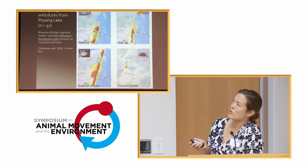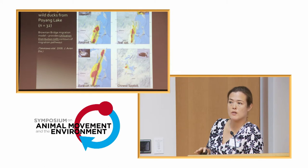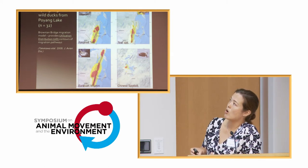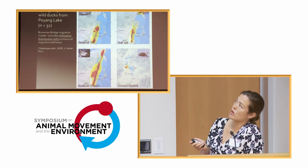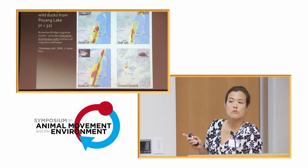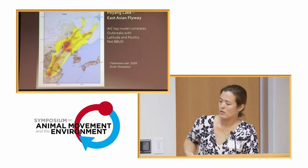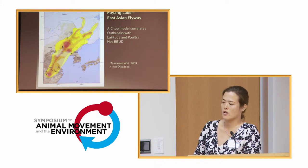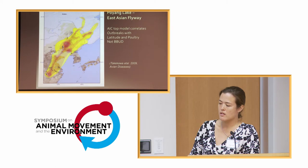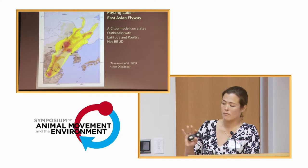This is the East Asian Flyway, with birds marked at Poyang Lake in the eastern part of China - an area with a lot of rice paddy farming, a lot of duck farming, and a lot of people all integrated on the landscape. Here are the Brownian bridge models for falcated teal, a grouping of other teal species, wigeons, and - this is really interesting - the Chinese spotbills. Some of them are migratory, but here we have a wild bird that is resident within this area. In this analysis using AIC selection, we found that outbreaks were most highly correlated with latitude and poultry density, but not necessarily with the wild bird migration corridors.